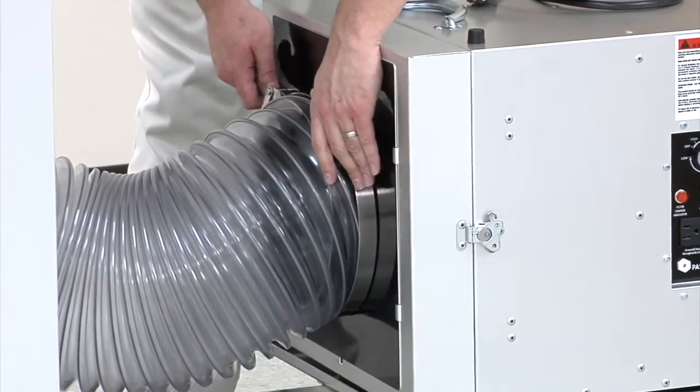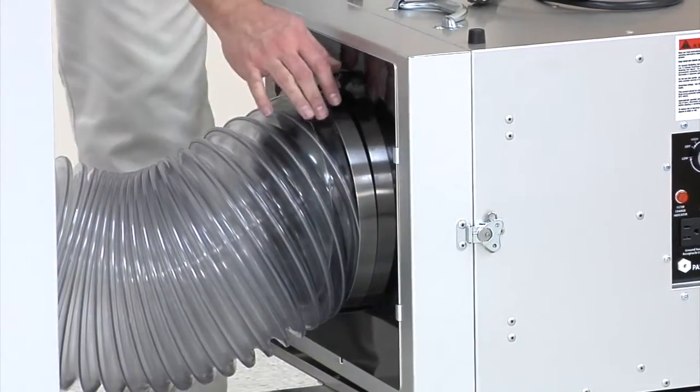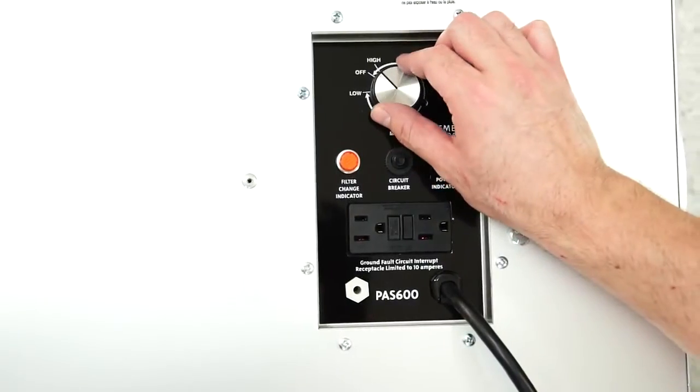Plug the scrubber into the 120 volt variable speed device receptacle and turn the unit on high.